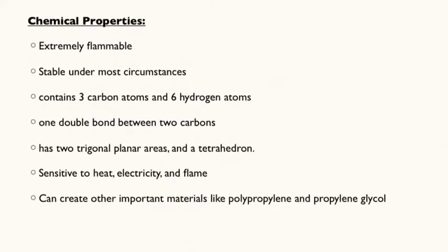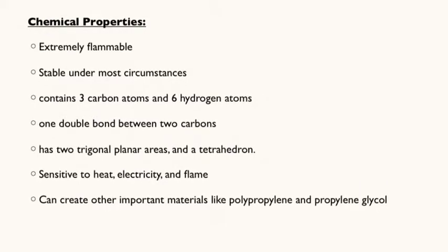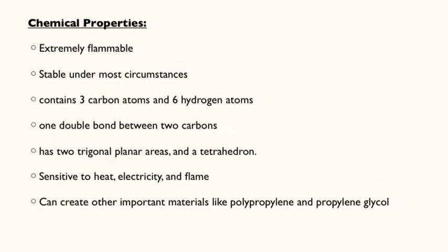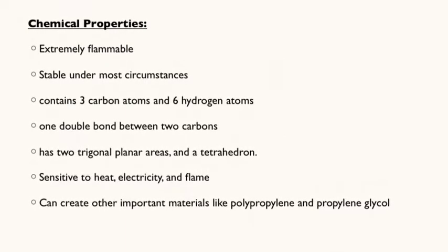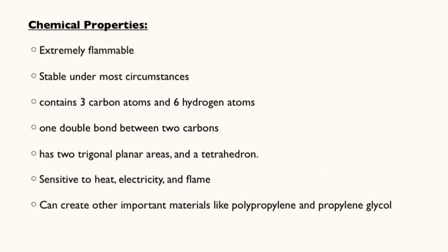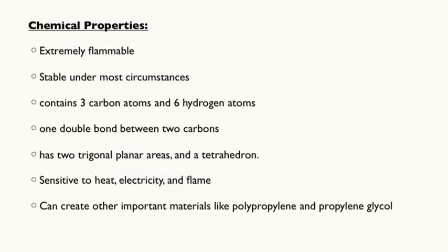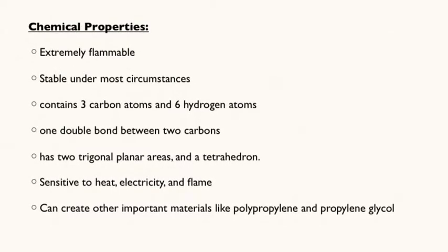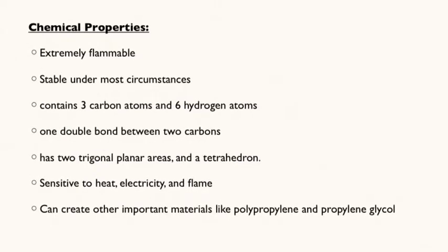Propylene is a chemical that is relatively stable, although it is extremely flammable and sensitive to heat, electricity, and flame. It contains three carbon atoms and six hydrogen atoms, bonded by one double bond and the rest single bonds. It has two trigonal planar areas and one tetrahedron. It has the ability to react and create other important materials like polypropylene and propylene glycol.